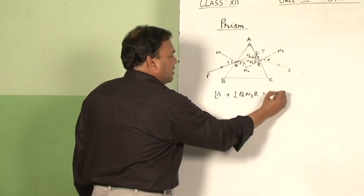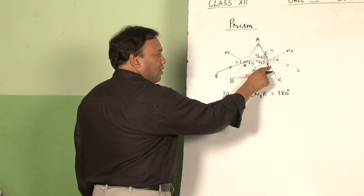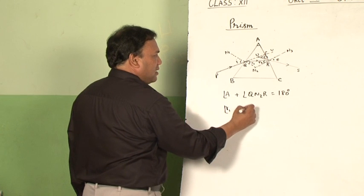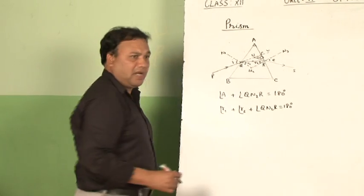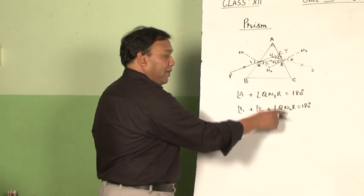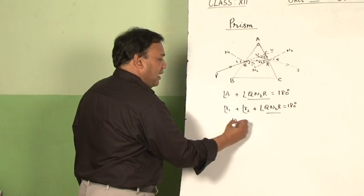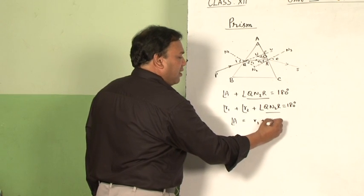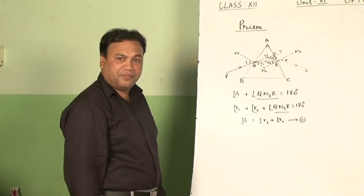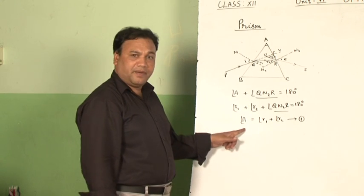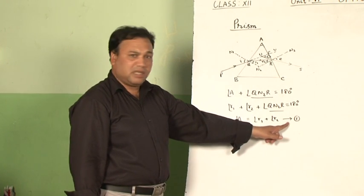Similarly, in triangle QN2R: angle r1 plus angle r2 plus angle QN2R equals 180 degrees, because the sum of angles in a triangle is 180 degrees. Comparing these two equations, the angle QN2R cancels, leaving: angle A equals angle r1 plus angle r2. Call this equation number 1.